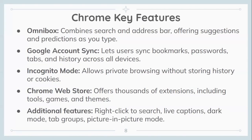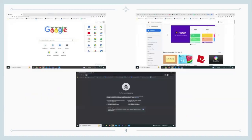Chrome key features: Omnibox — combines the search and address bar, offering suggestions and predictions as you type. Google account sync lets users sync bookmarks, passwords, tabs, and history across all devices. Incognito mode allows private browsing without storing history or cookies. The Chrome Web Store offers thousands of extensions including tools, games, and themes. Additional features include right-click to search, live captions, dark mode, tab groups, and picture-in-picture mode. Here are some screenshots — the bottom is Incognito, top left is the standard view, and top right is the Web Store.